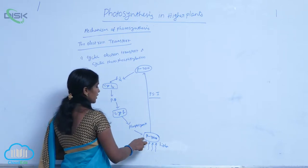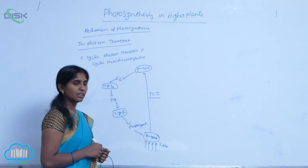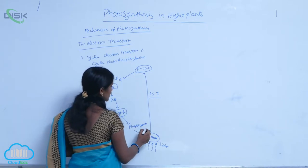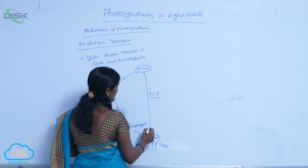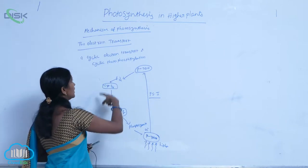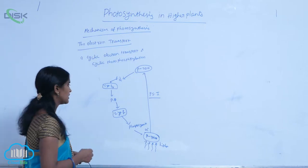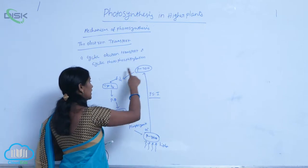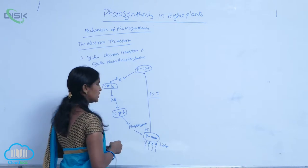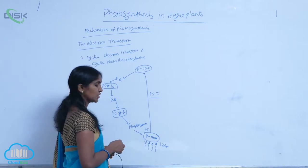When P700 gets excited, two electrons are released. These released electrons circulate within the photosystem, meaning they come back and reach the P700 reaction center again.